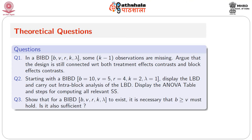In the related exercises and MCQs, we tried to understand the concept of connectedness and the concept of balance from various aspects. Now let us look at the exercise questions. The first one: in a BIBD with parameters B, V, R, K, Lambda, some K-1 observations are missing. We need to argue that the design is still connected with respect to both treatment effects contrasts and block effects contrasts.